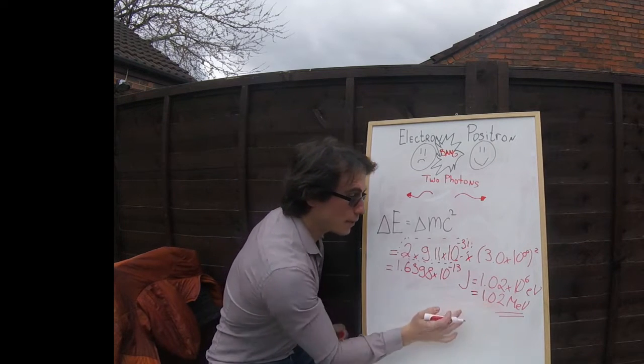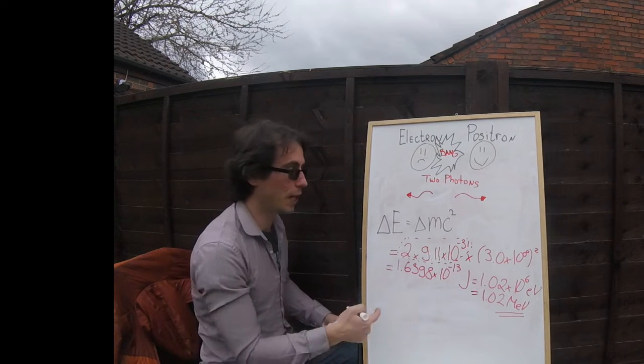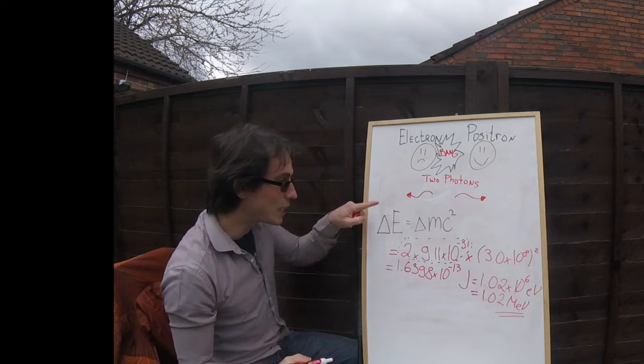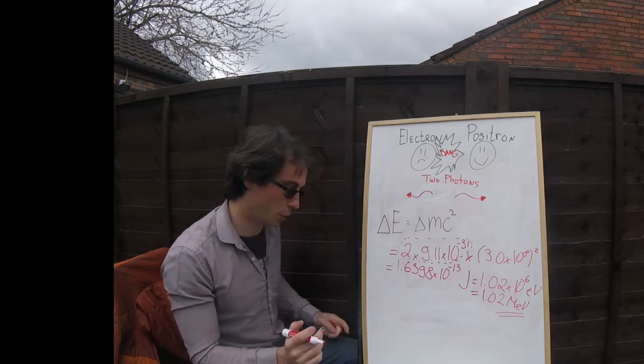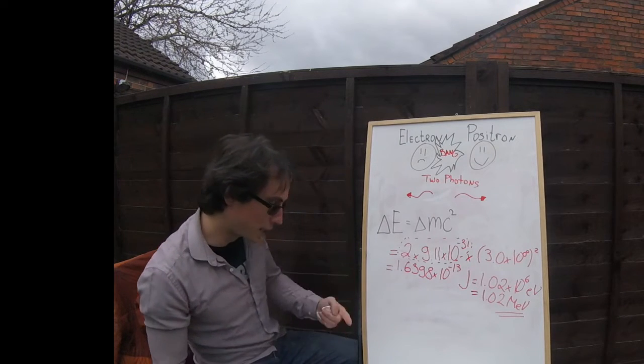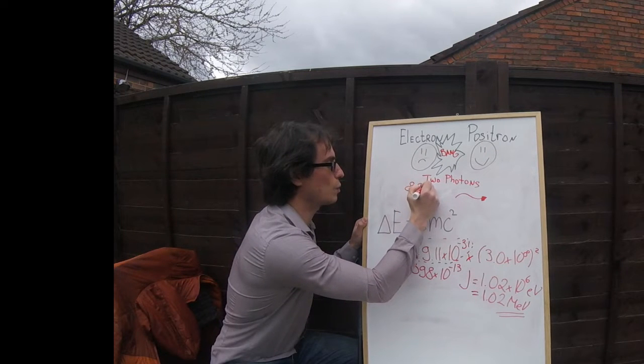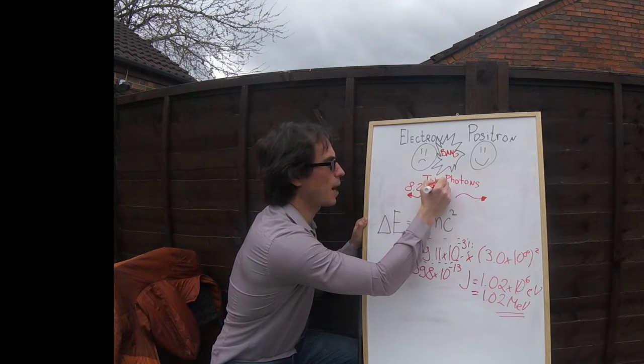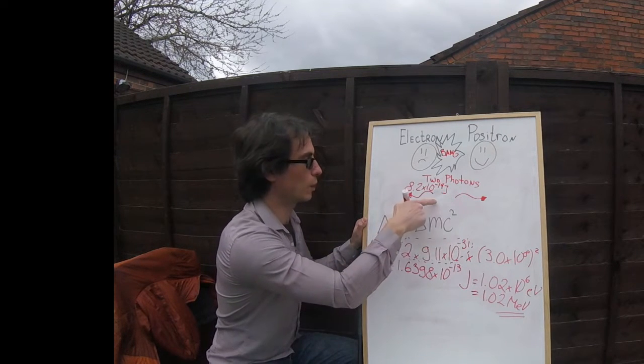Okay, so that's how many mega electron volts, that's how many joules of energy we get. And remember, each one of those photons is going to have half of that energy. So if we divide this number by half, we're going to get about 8.2 times 10 to the power of minus 14 joules for each of those photons.